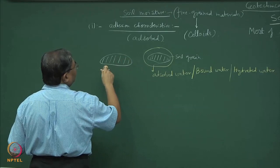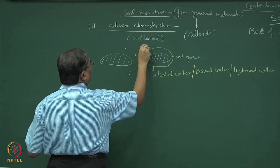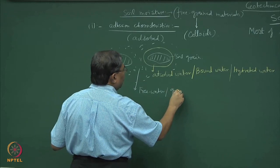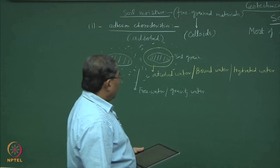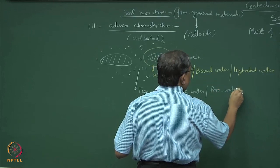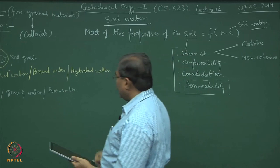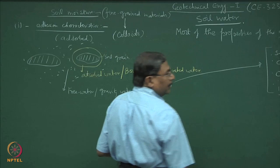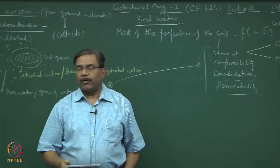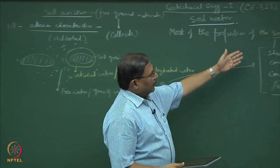In between the two particles or grains of soil we have free water — sometimes called gravity water, sometimes pore water. It is the first time I am using the term pore water. Most of the characteristics of soils directly depend upon the pore water; in other words, the pore water present in the pores of the soil mass controls all of them. Henceforth our focus will be to understand how pore pressure characteristics control all the fundamental properties of soils.